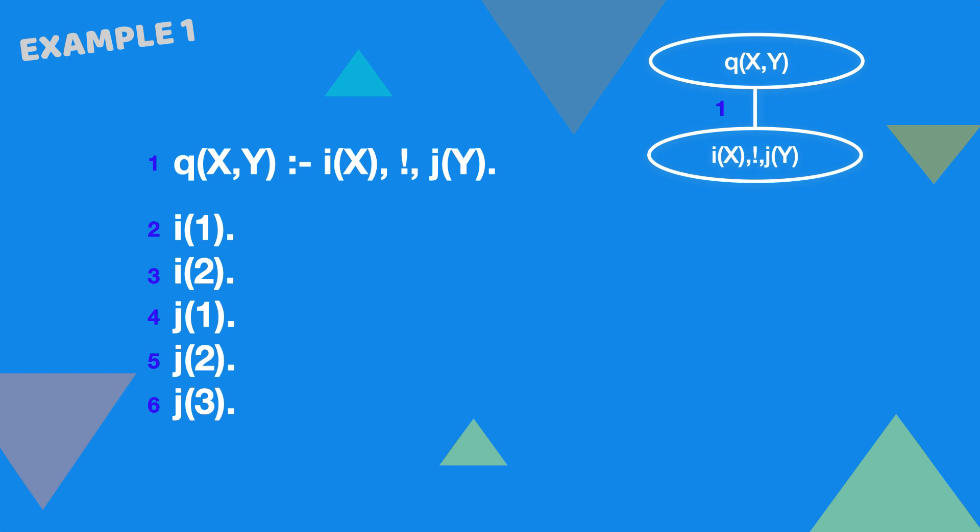With more than one goal, Prolog works from the left first, so the next goal is i x. Again searching from the top, this time we match with clause 2. This gives a variable binding for x.